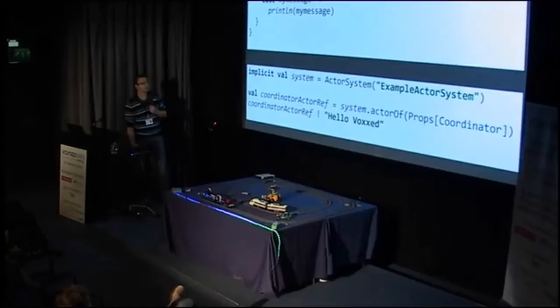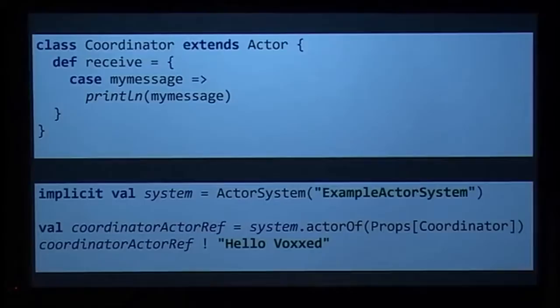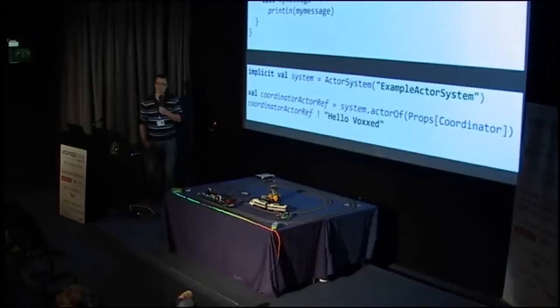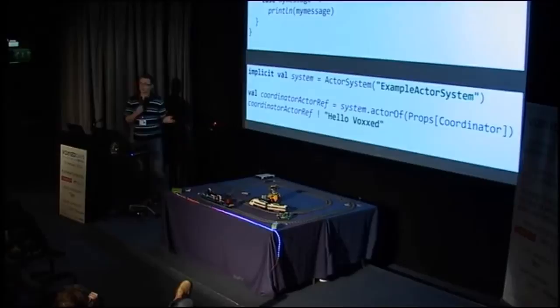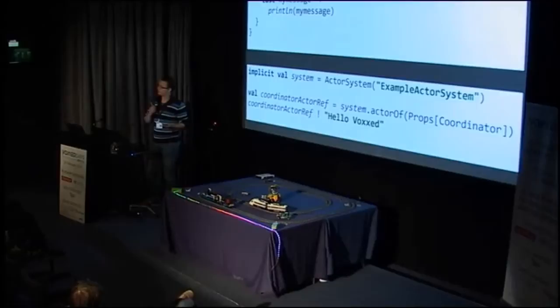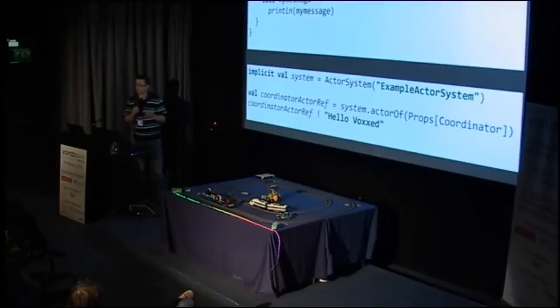Here's a super simple actor definition: the coordinator extends Actor and implements the receive method, which is how you receive a message from a different part of the system. In this example it can receive one type of message and just prints it. To send a message to that actor from elsewhere, you need an actor system — the first line creates the actor system, then you create a reference to the actor, and the bottom part calls the actor and sends it a message. This example shows a local actor, where multiple actors live in the same JVM.